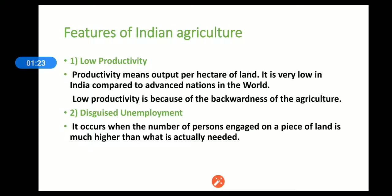Second feature is disguised unemployment. It occurs when the number of persons engaged on a piece of land is much higher than what is actually needed. Jab number of persons are more than what is required for the production of anything, we call it disguised unemployment. Disguised unemployment ko hidden unemployment bhi bolte hain.